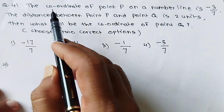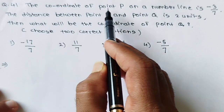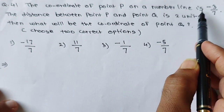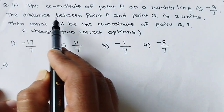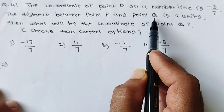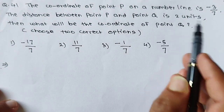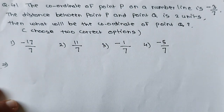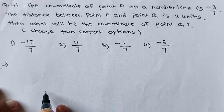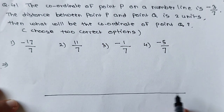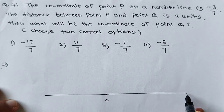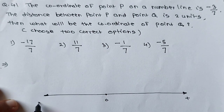See question number 41. The coordinate of point P on a number line is minus 3 upon 7. The distance between point P and point Q is 2 units. Then, what will be the coordinate of point Q? Choose two correct options. You know what is the number line? This is the number line. If this is 0, on the right side there will be plus and in this direction minus.